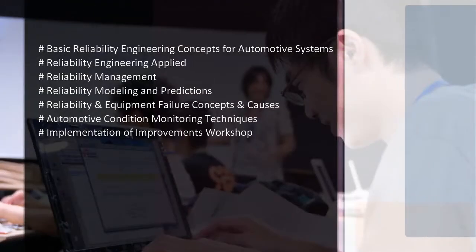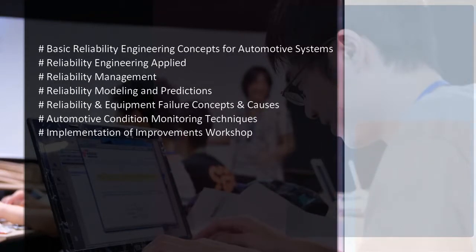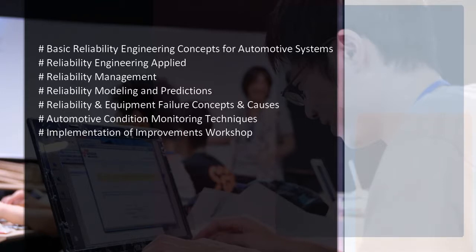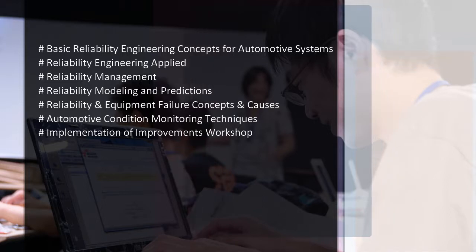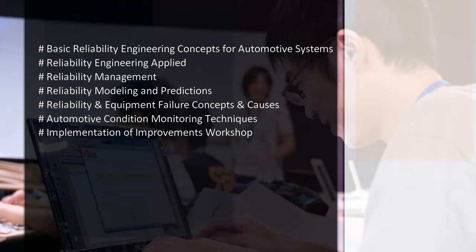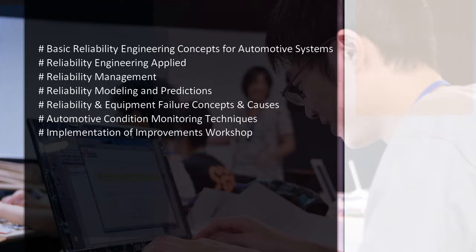The Systems Reliability in Automotive Engineering training course agenda includes: basic reliability engineering concepts for automotive systems, reliability engineering applied, reliability management, reliability modeling and predictions, reliability and equipment failure concepts and causes, automotive condition monitoring techniques, and an implementation of improvements workshop.